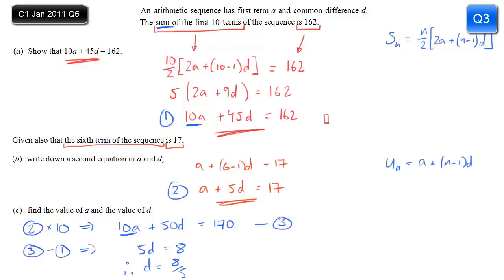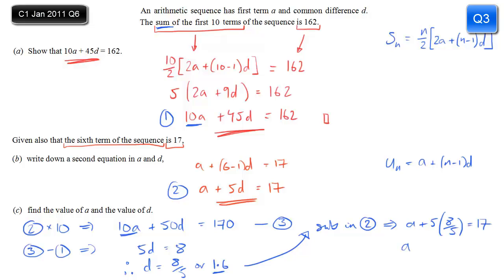When I divide by 5, I get d equals 8 over 5, or 1.6 in decimals. Now all that remains is to substitute that back into equation 2: a plus 5 lots of 8 over 5 equals 17. 5 times 8 over 5 is just 8, and we subtract 8 to get a equals 9. Job done.